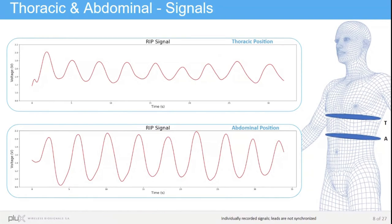This is important in applications where we have a lot of noise, because if the signal has a higher peak-to-peak amplitude, we can distinguish it much better from the noise. If we have a lower amplitude, then we might not be able to distinguish the signal from the noise.